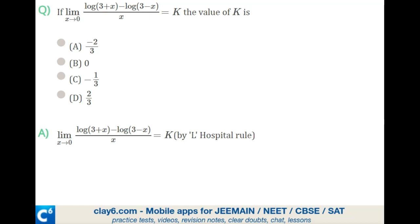So let us just apply L'Hospital's rule, which is that you have to differentiate both sides. You're going to end up with 1 by 3 plus x minus 1 by 3 minus x. You differentiate 3 minus x, you get minus 1 and then log t differentiation is 1 by t. So minus 1 by 3 minus x and you put them all together.